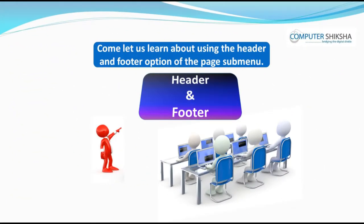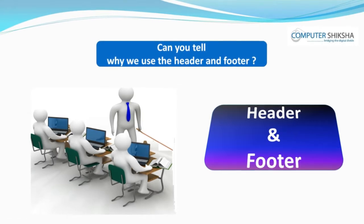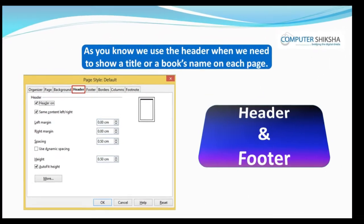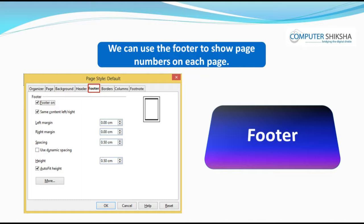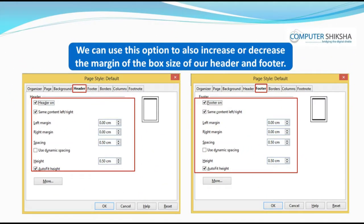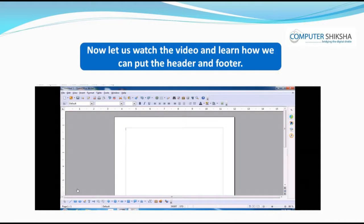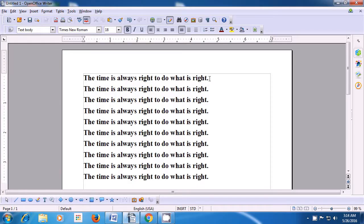Let us learn about using the header and footer option of the page submenu. Can you tell why we use the header and footer? We use the header when we need to show a title or a book's name on each page. We can use the footer to show page numbers on each page. We can also use this option to increase or decrease the margin or box size of our header and footer. You should also learn how to use the margin. Let us watch the video and learn how we can put the header and footer.